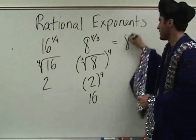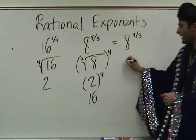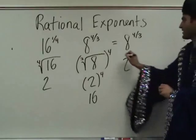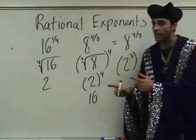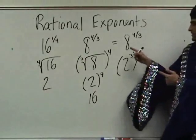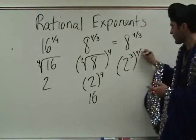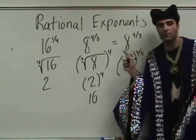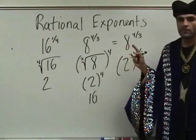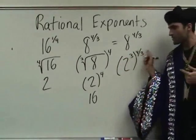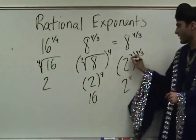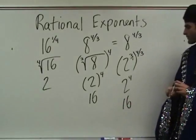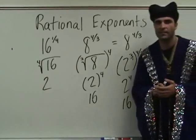Another way to do this is eight to the four-thirds. We could write eight as two to the third. The reason I did that is so that when I multiply by four over three out here, the threes cancel. When you take a power to a power, you multiply powers. So this would be two to the four, which is sixteen.